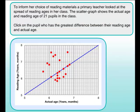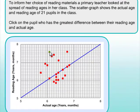Using the same scatter graph, we're now asked to click on the pupil who has the greatest difference between their reading age and their actual age. We could work through each point one by one, but the quick way is to find the point that is furthest from the blue diagonal line at 90 degrees. Most points are quite a small distance away, but in this region there's one point with quite a big distance - bigger than any of the others. That's the one we're looking for.